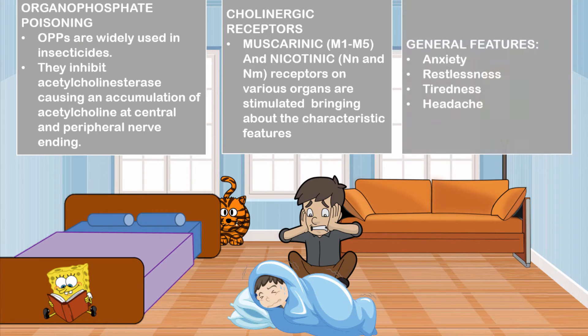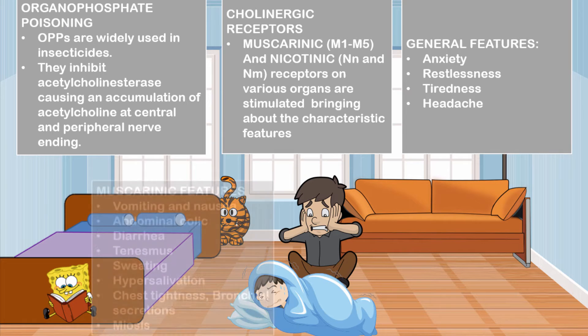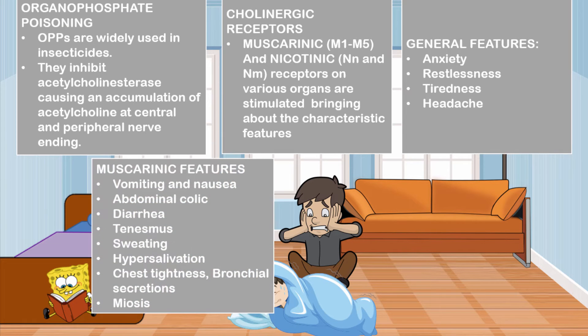Some general features include anxiety, restlessness, tiredness, and headaches. You may also get muscarinic features such as vomiting, nausea, abdominal colic, diarrhea, tenesmus, sweating, and hypersalivation. You may get chest tightness, bronchial secretions, and even miosis.